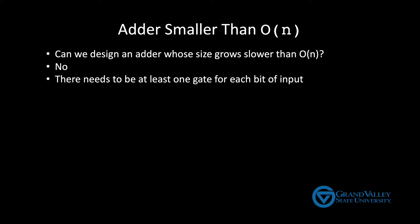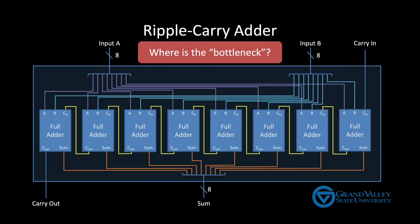Fortunately, the problem of reducing the propagation delay is a little more interesting. To see how we can improve this speed, we begin by asking, where's the bottleneck? Or in other words, what's the key aspect of this design that makes the time linear?